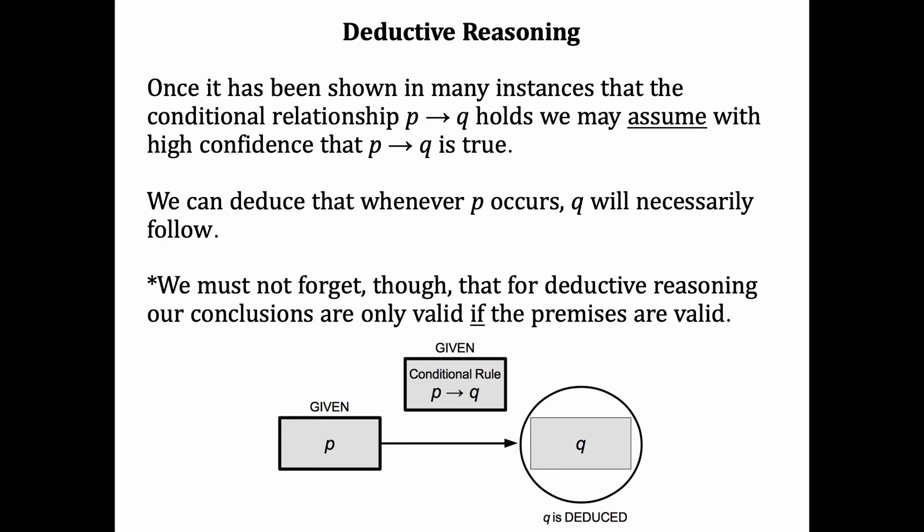Once it's been shown in many instances that the conditional relationship P leads to Q holds, and we could assume with very high confidence that it's true. We can deduce that whenever P occurs, Q will necessarily follow. But we have to remember our conclusions are only true if the givens were true.